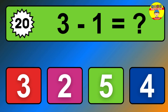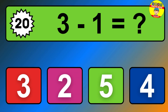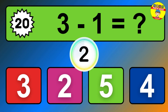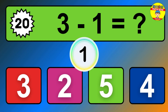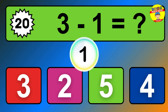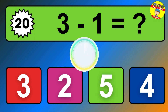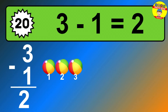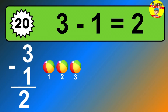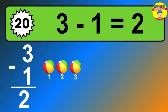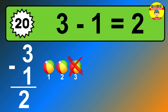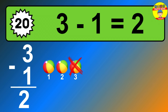Question 20. 3 minus 1 equals what? So the answer is 3 minus 1 is 2. Let's count it. 1, 2.